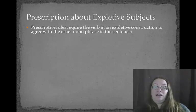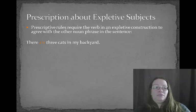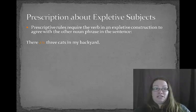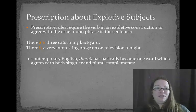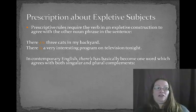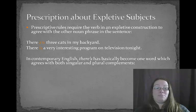Prescriptive rules require that the verb agree with the other noun phrase in the sentence. In 'There are three cats in my backyard,' 'are' should agree with 'three cats,' not with the expletive subject. In contemporary English, the contraction 'there's' has become used for both singular and plural complements. So while 'there are three cats in my backyard' is correct, people commonly say 'there's three cats in my backyard' — that is prescriptively incorrect, even though it seems fine with our English mental grammar.